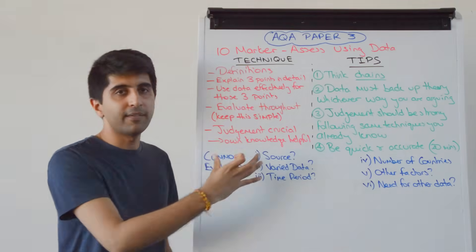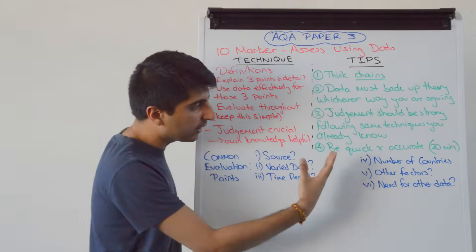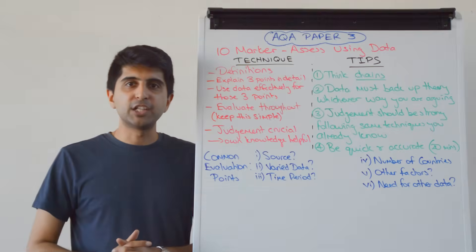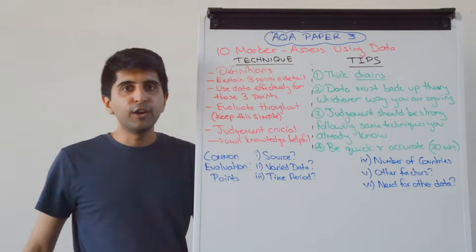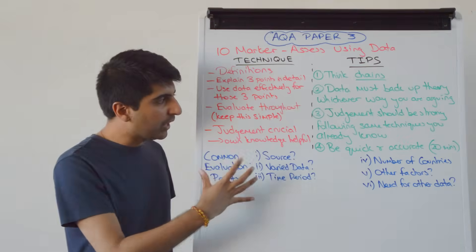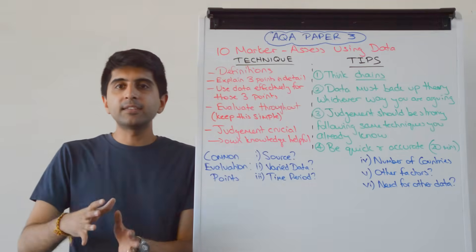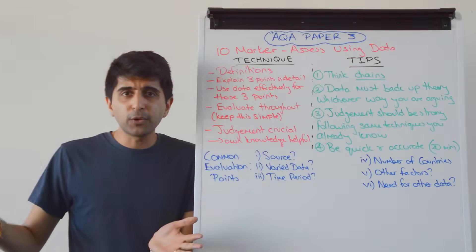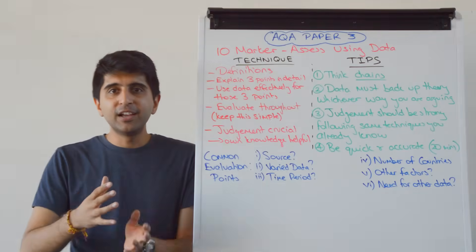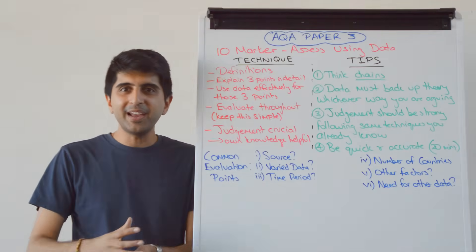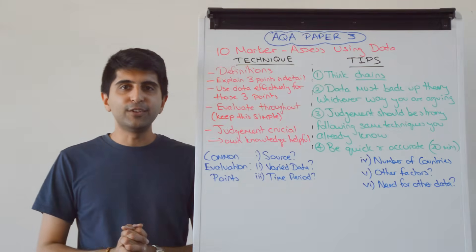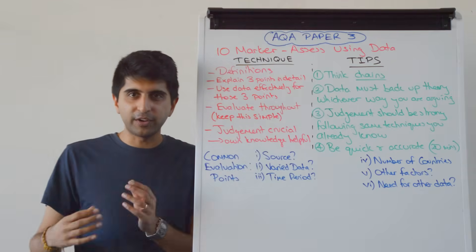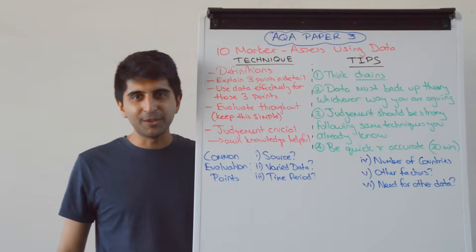These are good evaluation points — whenever you're assessing data, always look out for these in your 10-marker. They will always apply somewhere and will really help you make a judgment and evaluate throughout the essay. Hopefully now you can nail this 10-marker. Practice it — use past paper questions, or form your own questions, find some data, work out a question around it, and have a go. Practice will make perfect. I think it's a very easy, quite fun question. All the best with it — I'll see you later.